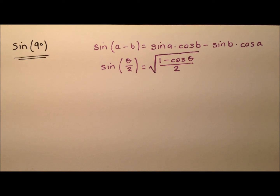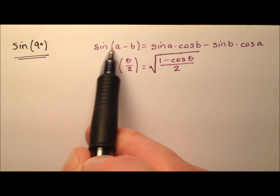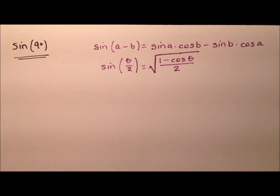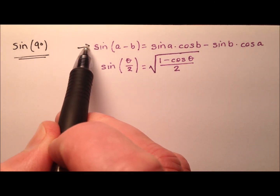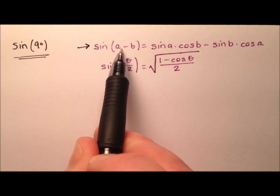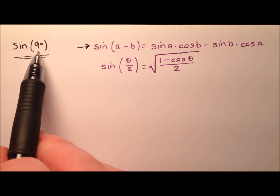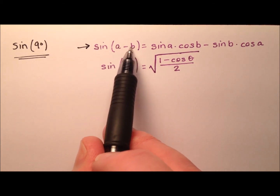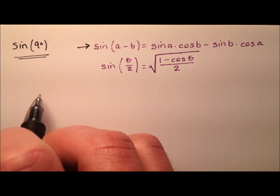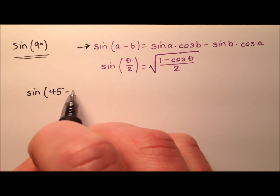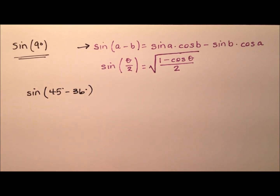So we're going to do it two ways. One way, we're going to use the difference equation for sine, and the other way, we're going to use the half angle identity for sine. Let's go ahead and use this difference formula first. We want to subtract and make 9 degrees, but they need to be angles that I know the sine and cosine for. So let's go ahead and make this the sine of 45 degrees minus 36 degrees.